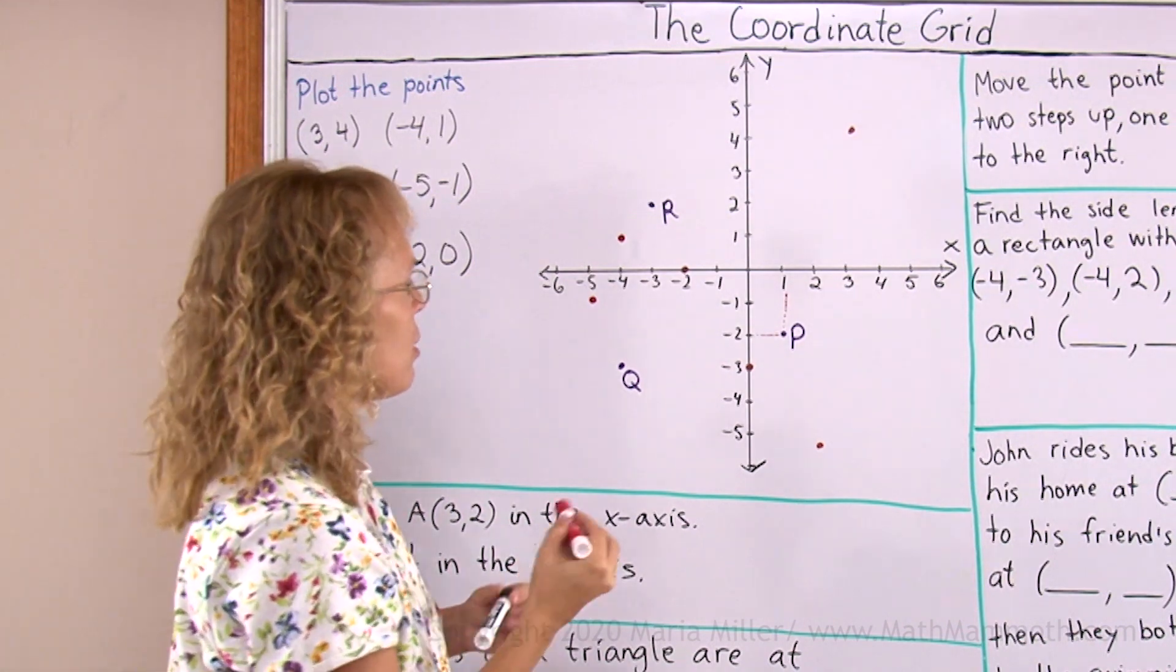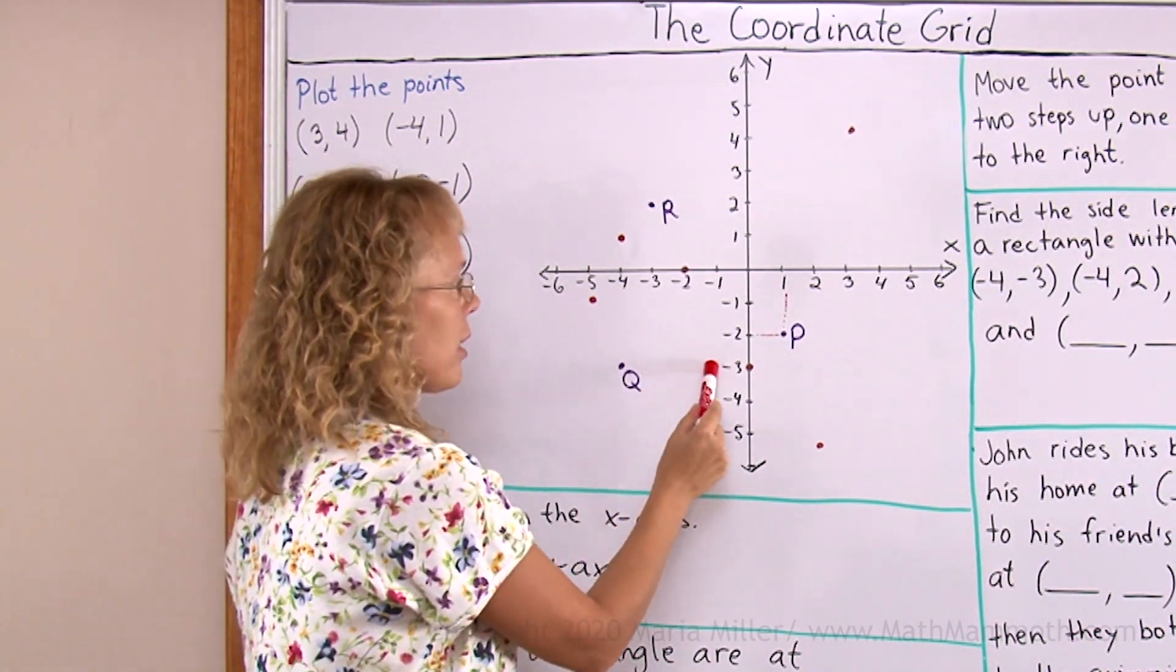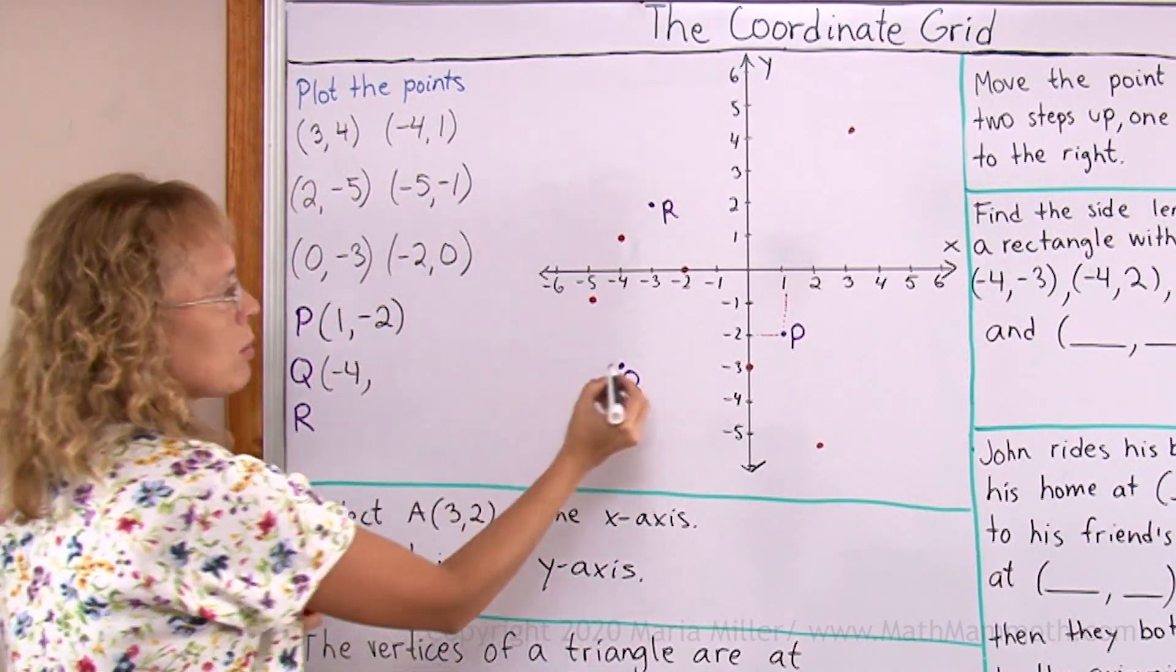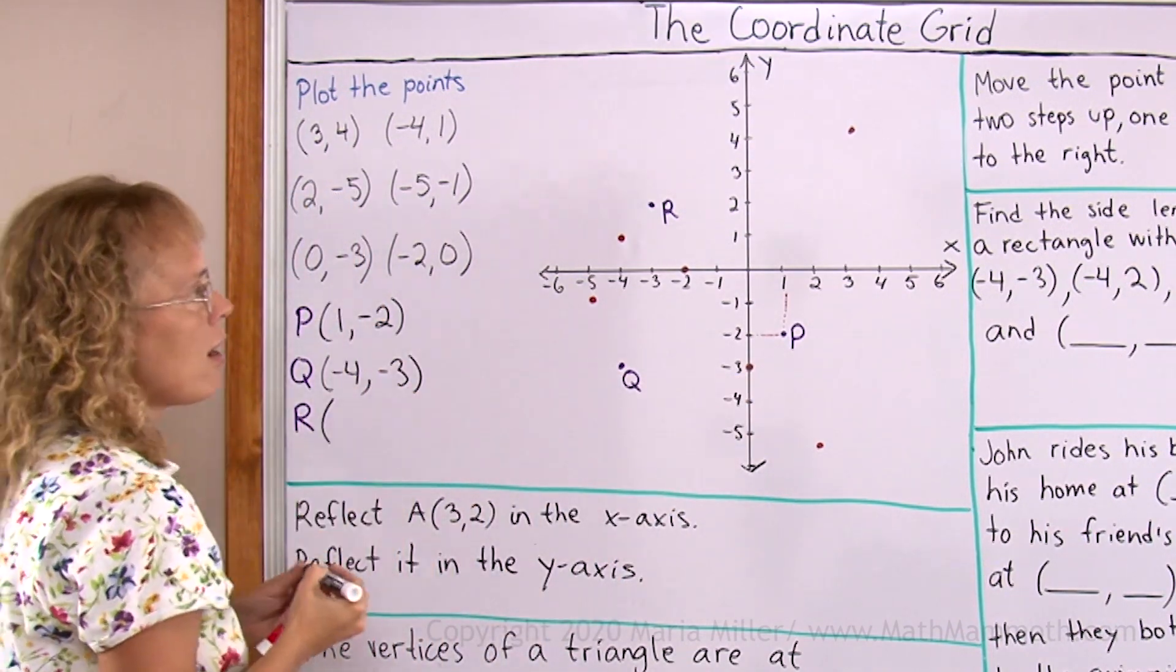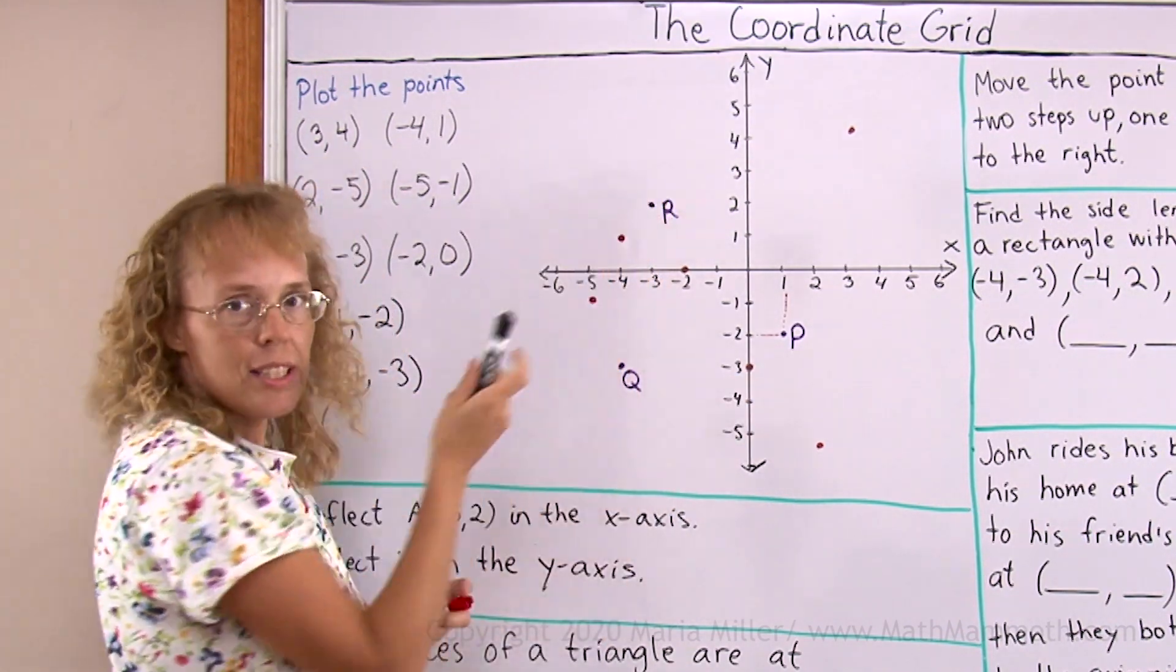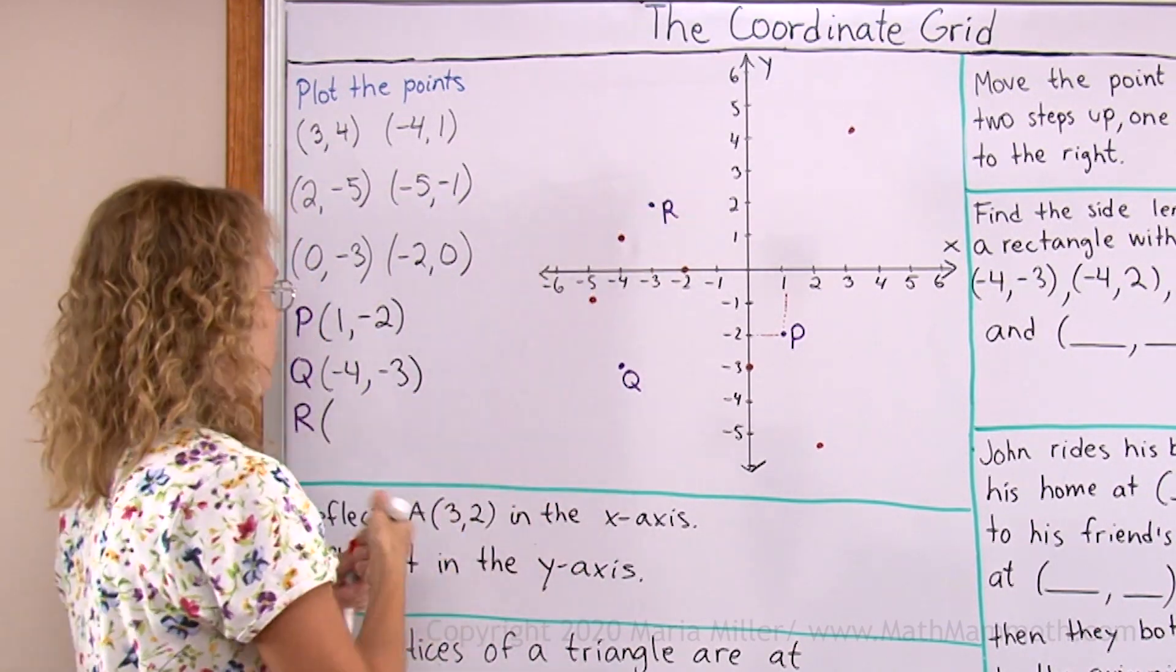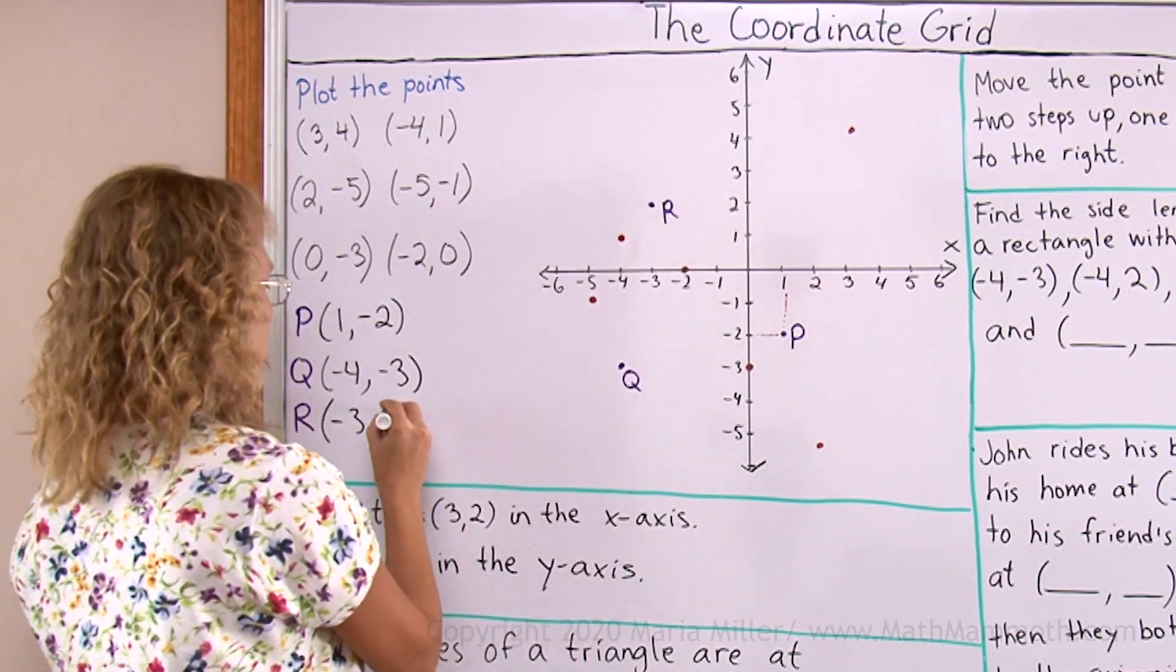For Q we do the same. Look over here towards the x-axis and towards the y-axis. Towards the x-axis is -4 and towards the y-axis -3. And then R, look towards the x-axis first, which means you look down, -3, and then towards the y-axis which is 2.